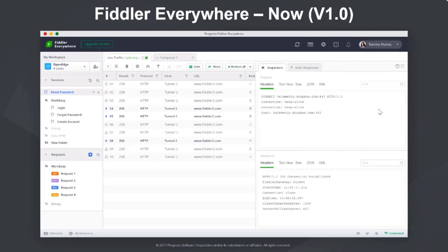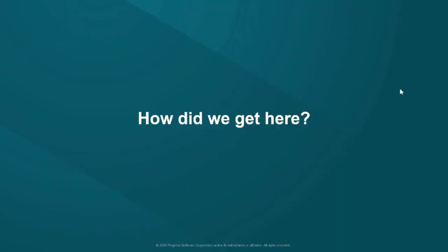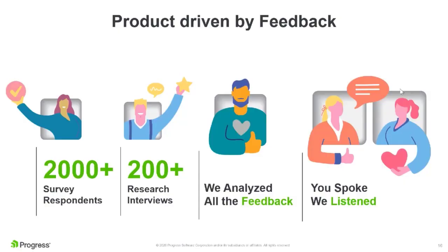So how did we get here? It all started with you. We did surveys and got around 2,000 responses from our Fiddler community. We also got great qualitative feedback through research calls - we spoke to more than 200 users from our community. The feedback has been tremendous and helped us shape our roadmap and build the tool for your needs.